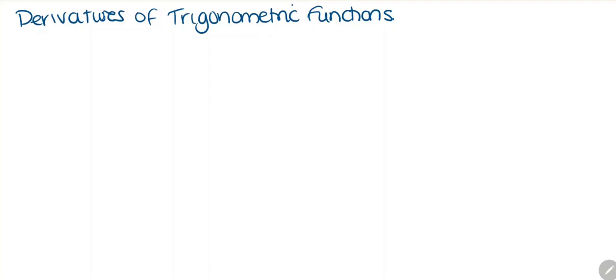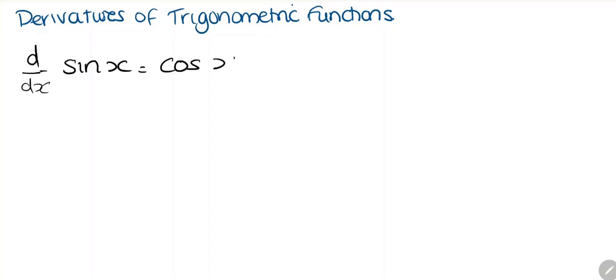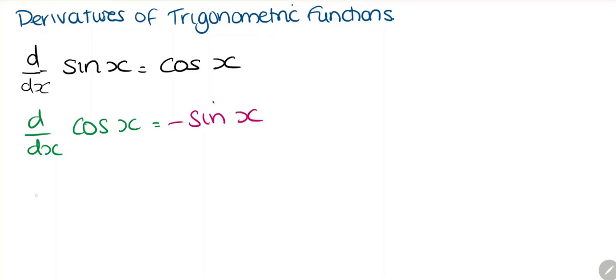Let's have a look at derivatives of trigonometric functions. Let's remind ourselves of the six trigonometric functions. If we take the derivative d/dx of sine of x, this is going to be cosine of x. If we take the derivative of cosine of x, this is going to be negative sine of x. And if we take the derivative of tangent of x, this will be secant squared of x.